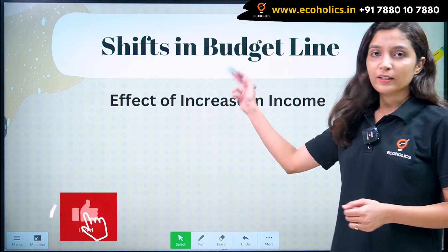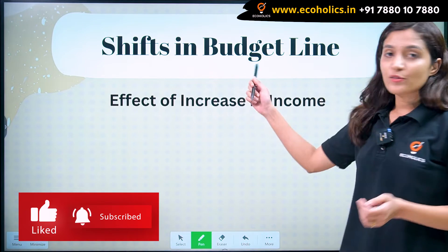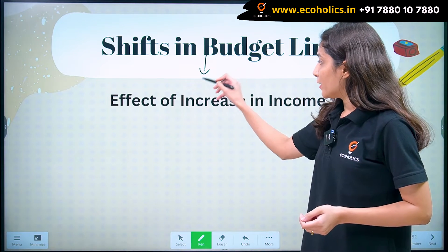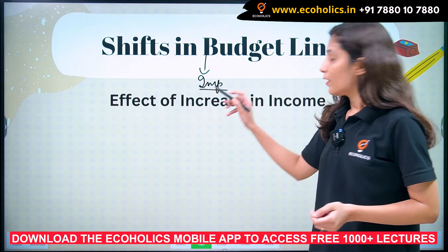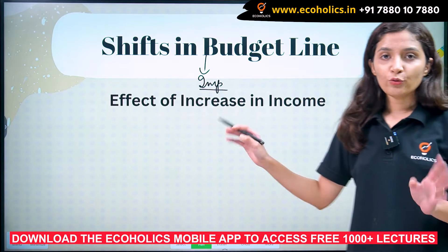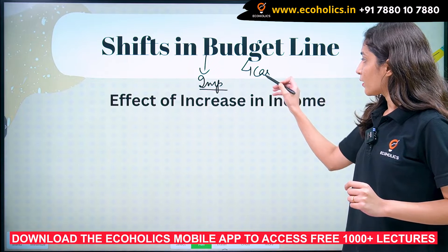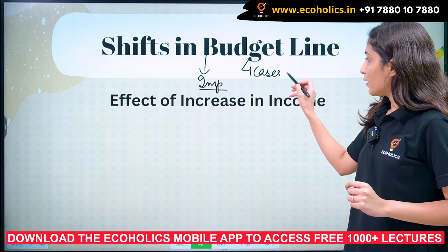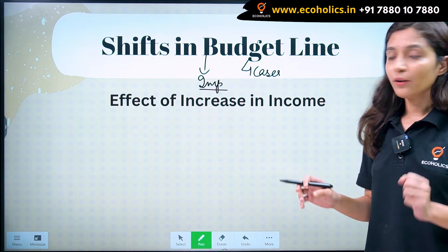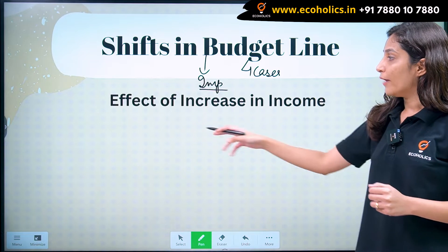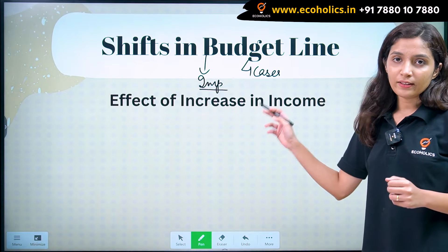Coming on to shifts in budget line. This is very important from an examination perspective. There are total 4 cases, and we are going to study each case one by one. So first we have the effect of increase in income.